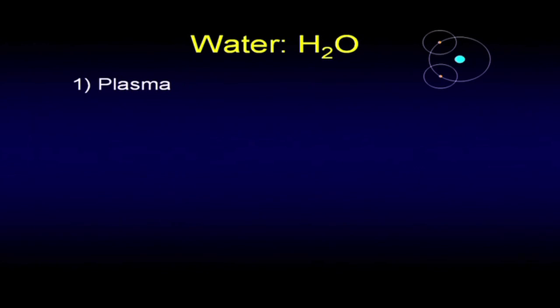What some people would call the fourth state, I'm going to call the first state. In its most disorganized state, at highest energy levels, it would be in plasma. I'm going to use oxygen molecules here as a blue dot. I'm going to use hydrogen atoms as a yellow dot. If we have a scattering of disassociated oxygen atoms and disassociated hydrogen atoms, we have what's called a plasma.